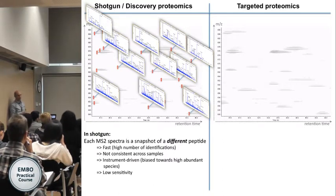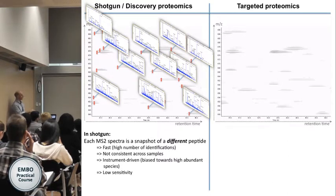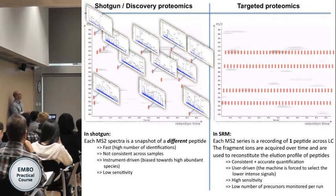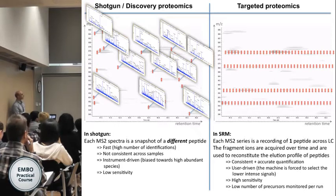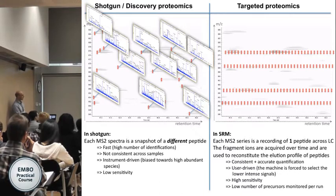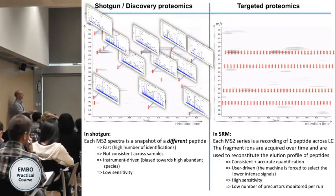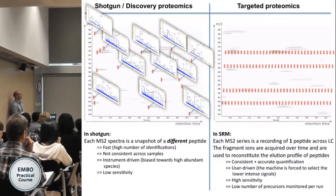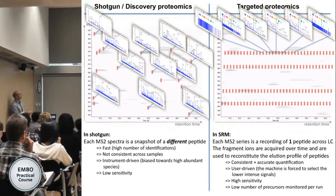In targeted proteomics, each MS/MS series is not a different species but a recording of one peptide across the chromatographic dimension. You force the machine to take the same picture over and over. What you get is essentially MS/MS spectra of the same species — at the beginning nothing, then fragments increasing as the peptide elutes, then decreasing when the peptide is gone. So you acquire fragments continuously and use those MS/MS fragmentations to reconstitute the elution profile of the peptide.